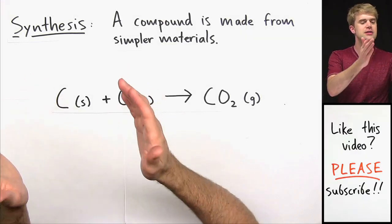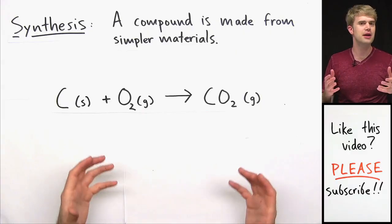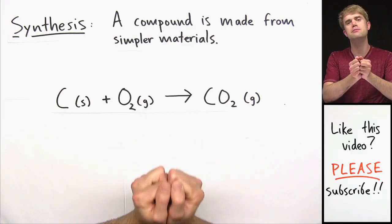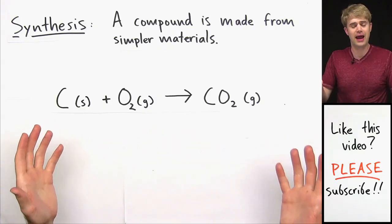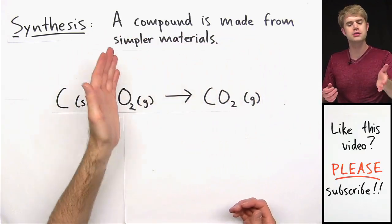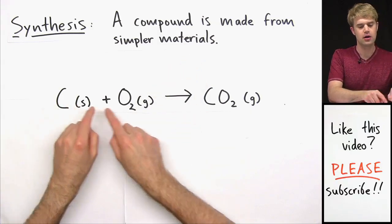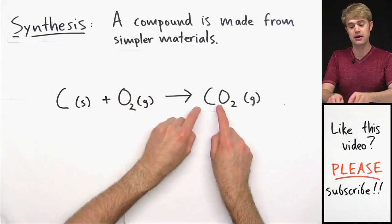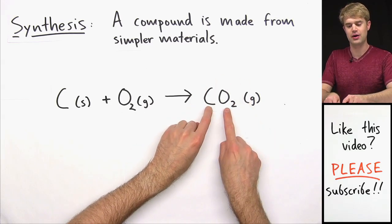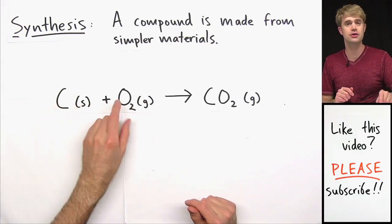The first reaction we're going to talk about is the synthesis reaction. These are sometimes called combination reactions. Synthesis is just a fancy word that means making, and that's exactly what happens in a synthesis reaction — a compound is made from simpler materials. Here's an example: carbon comes together with oxygen gas to make carbon dioxide, CO2. What we make in this reaction is more complex than the two simple things that we start with.